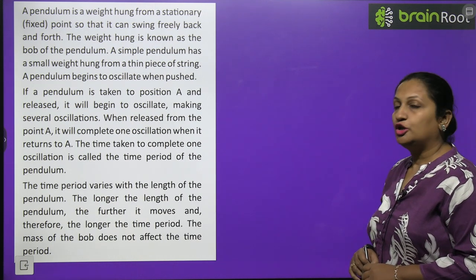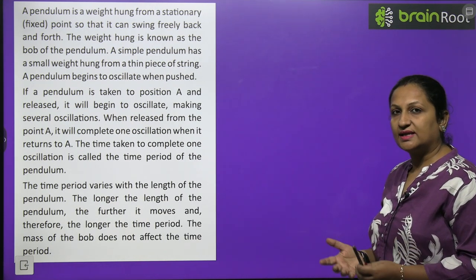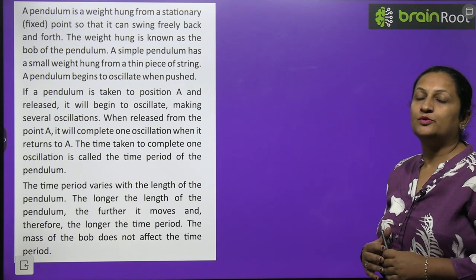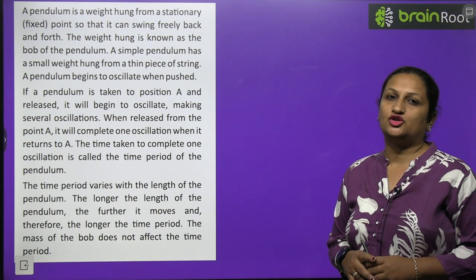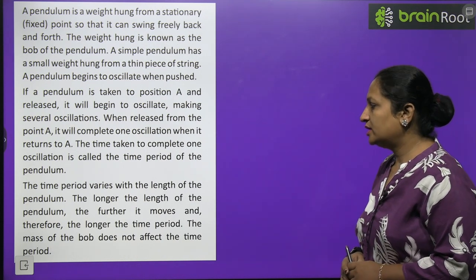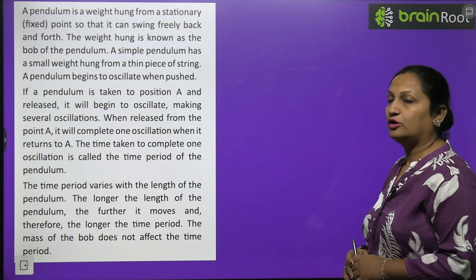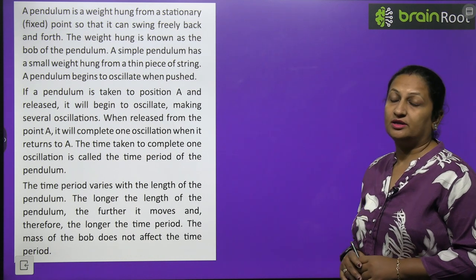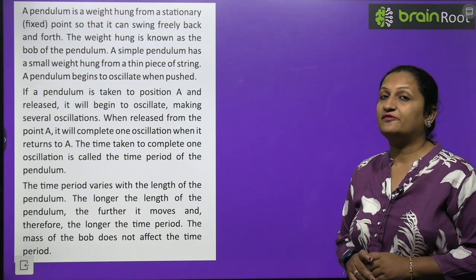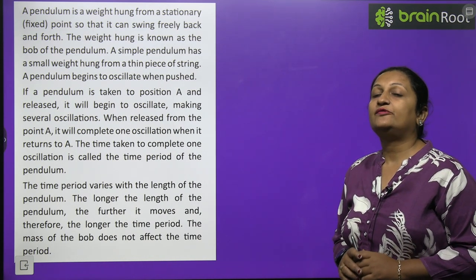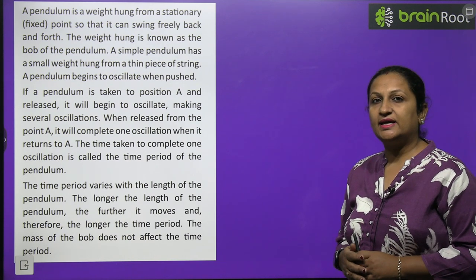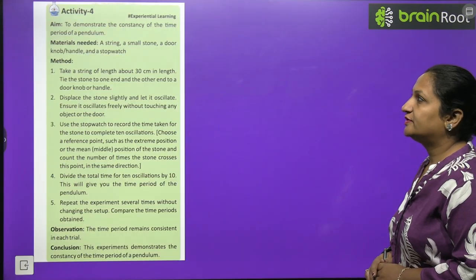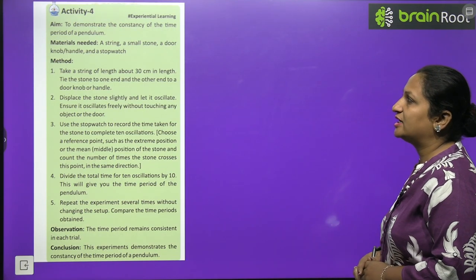The time taken to complete one oscillation is called the time period of the pendulum. The time period varies with the length of the pendulum — the longer the length, the more time the pendulum takes to return to its original position. The longer the length of the pendulum, the further it moves, and therefore the longer the time period. The mass of the bob does not affect the time period — it depends only on the length.